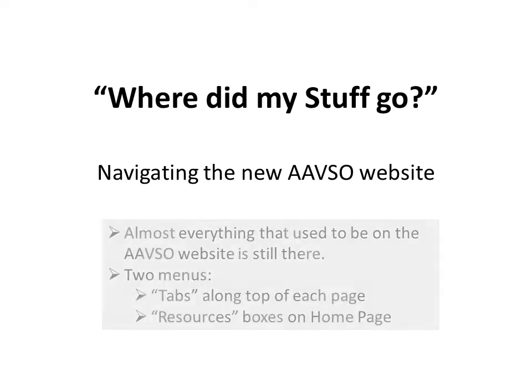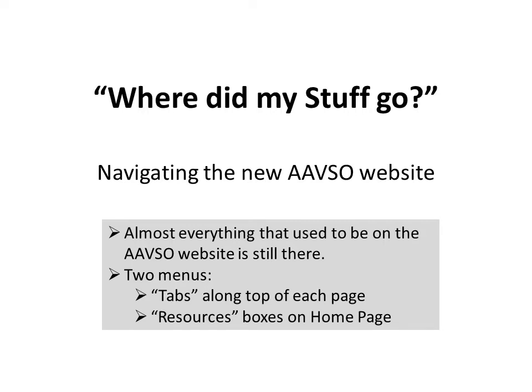Two key points. First, almost everything that was on the old website is still there — you should not have lost access to any functions that you routinely use. Second, there are now two menus. Tabs along the top of each page reach primarily information about the AAVSO and information aimed at people who are not experienced observers, while the resource boxes in the middle of the home page primarily reach tools used by observers and researchers.